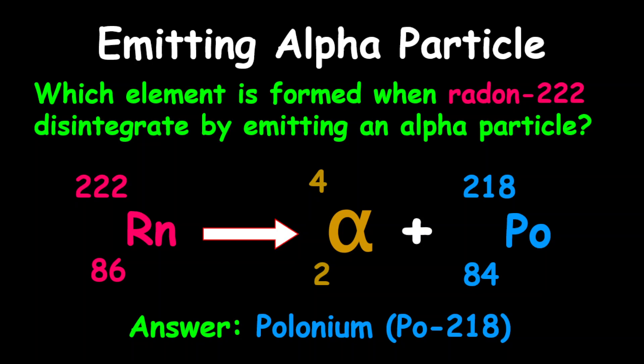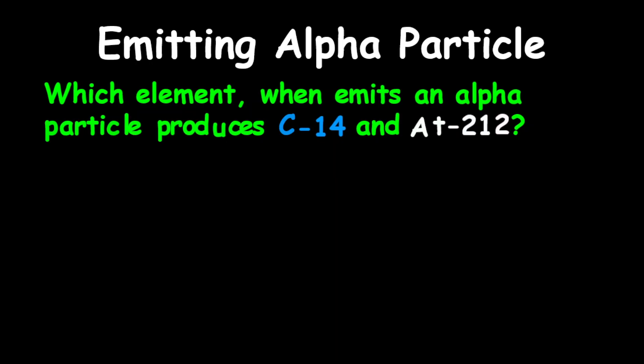For the next example, the question reads: which element when emits an alpha particle produces carbon-14 and astatine-212? By looking at the question carefully, you realize that alpha particle, carbon-14, and astatine, they are all products.